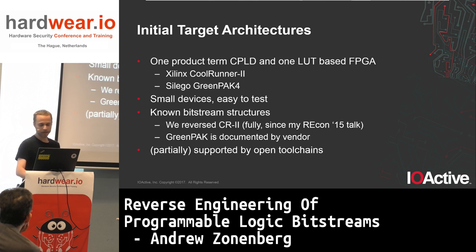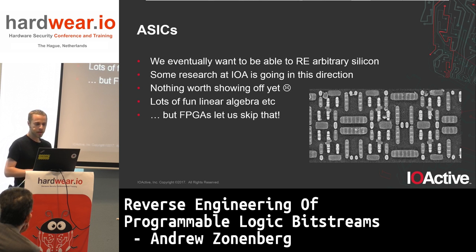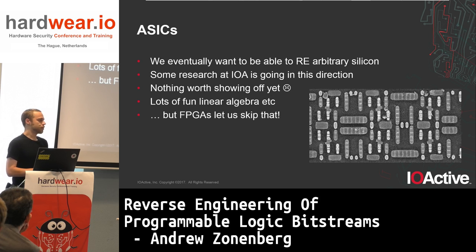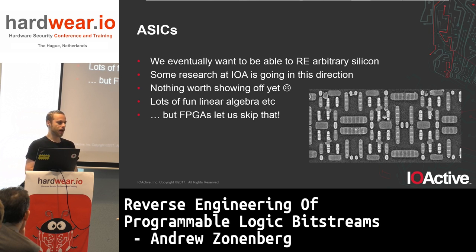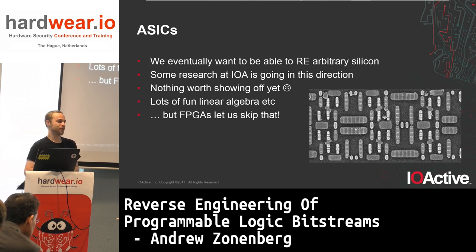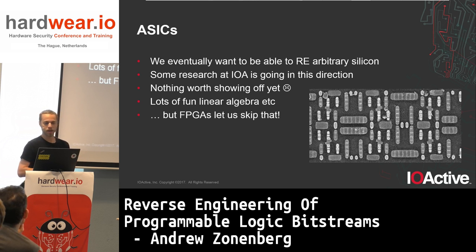Most of my examples came from GreenPak because the CoolRunner forward flow is less well-developed, requiring manual bit twiddling to create test structures. But I do have a couple of CoolRunner examples. Down the road, we want to use this to reverse-engineer arbitrary silicon. There's been good work both at IOActive internally and elsewhere, but most other players aren't sharing their code, and ours isn't yet usable for anything — so this is a future work category.